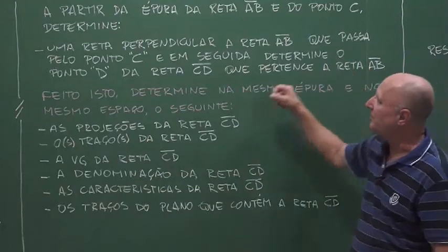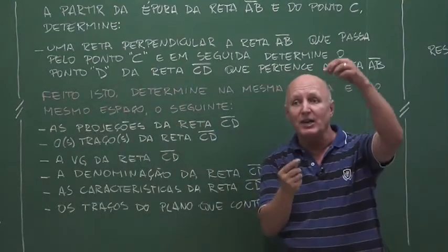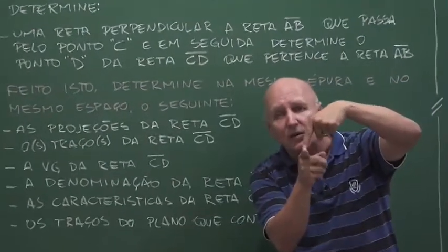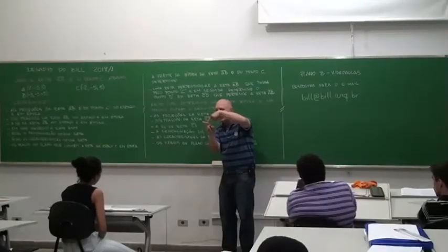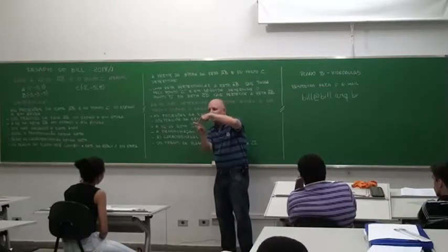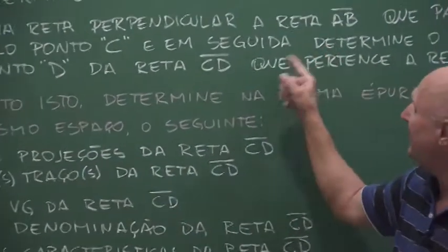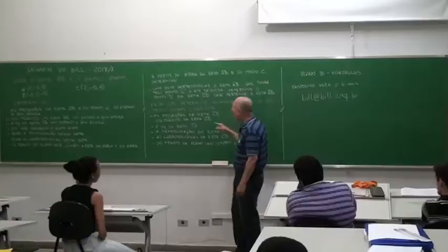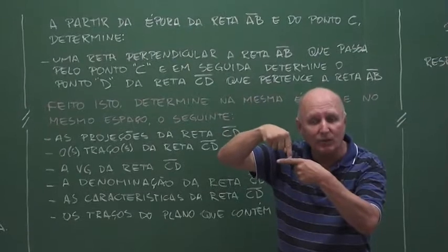After you do this, you will determine point D. What is point D? Point D is where the line you drew, which is perpendicular to line AB, crosses line AB. This point where the perpendicular line crosses AB — you will determine it and call it point D. It will be point D of line CD, and it belongs to line AB.